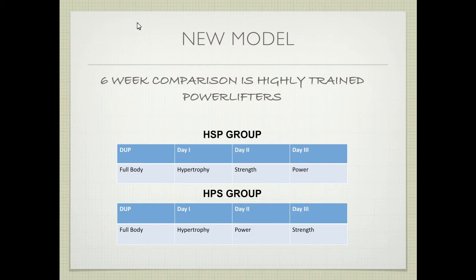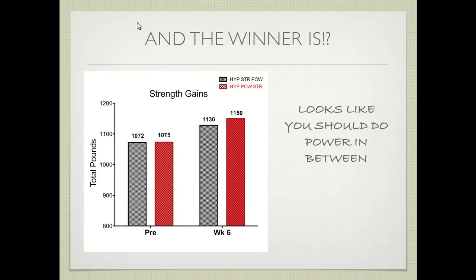This is a study done back at Florida State. We tested hypertrophy day one, strength day two, power day three versus a hypertrophy, power, strength order. The totals were the same at baseline, but the hypertrophy-power-strength group put on about 20 more pounds on their total than the hypertrophy-strength-power group. It seems that power should be in between, because it's less fatiguing and you're more ready to perform on the final day.